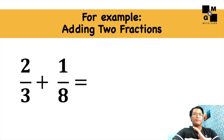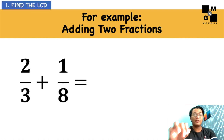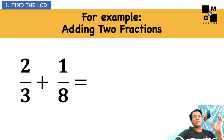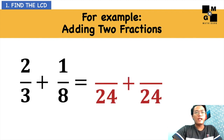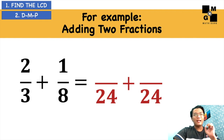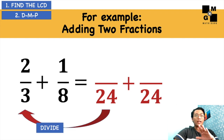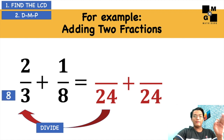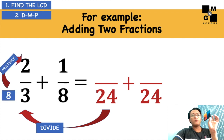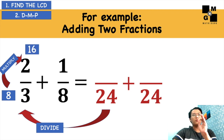Let's take, for example, 2 thirds and 1 eighth. The first step is we need to find the LCD. The LCD of these two fractions is 24. So next, apply the DMP — that is divide, multiply, and then put. So 24 divided by 3, you will get 8. From that answer, you need to multiply it. So 8 times 2, it will give you 16.